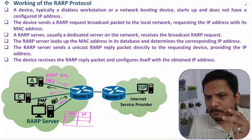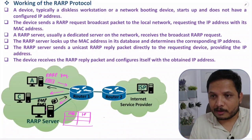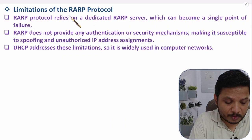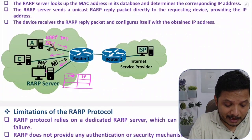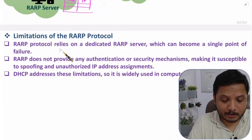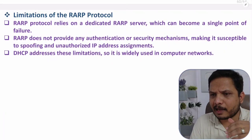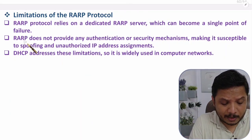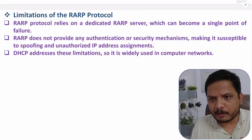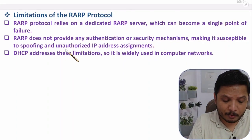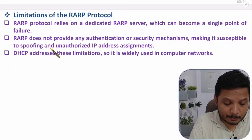There are essential drawbacks with RARP protocol, which is why it is no longer used practically. First, RARP relies on a dedicated RARP server, which becomes a single point of failure — if the RARP server fails, the entire network is affected. Second, RARP does not provide any authentication or security mechanism, making it possible to provide IP addresses to unauthorized devices.